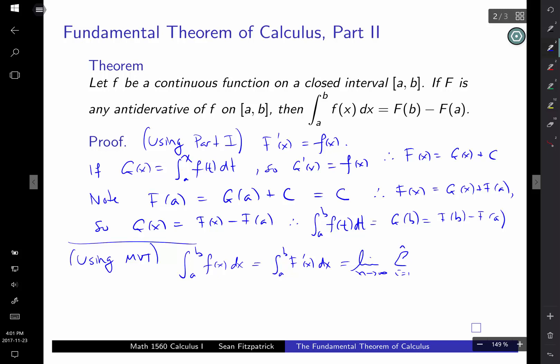Sum i going from 1 to n. Big F prime of some ci times delta x, right? Okay, and now here's the thing. On each one of these intervals, xi minus 1 to xi, we know from the mean value theorem that we can choose some ci so that f prime of ci is f of xi minus f of xi minus 1 over, well, what's the difference between the two endpoints? over delta x, right?